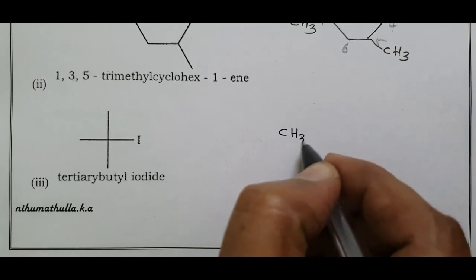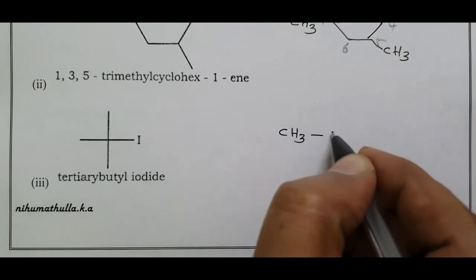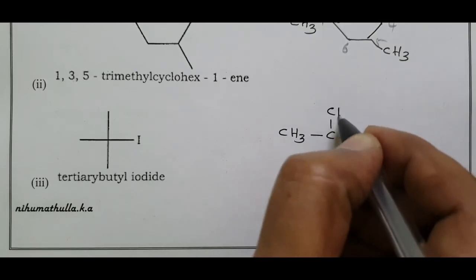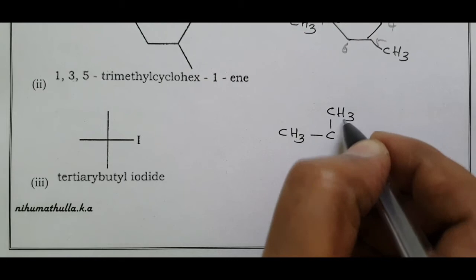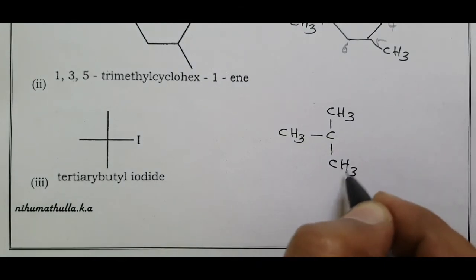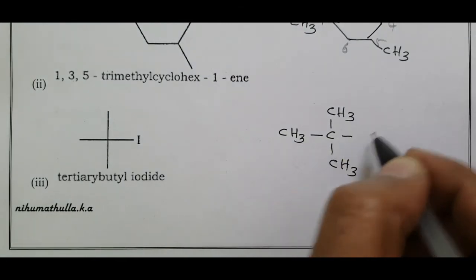The tertiary butyl group has a central carbon bonded to three CH3 groups: CH3–C(–CH3)–CH3. This is the tertiary butyl group.